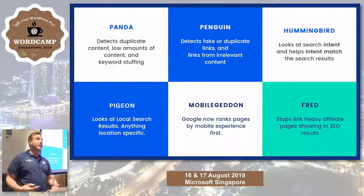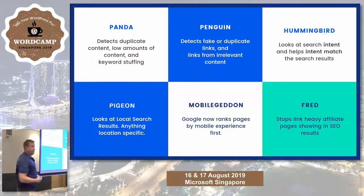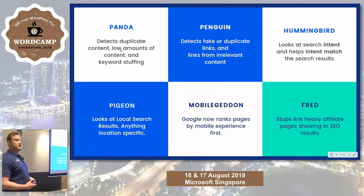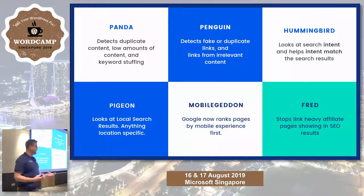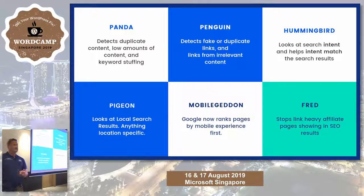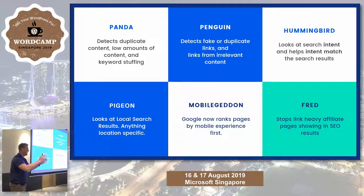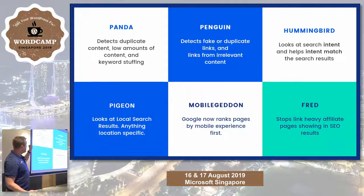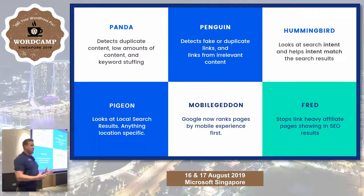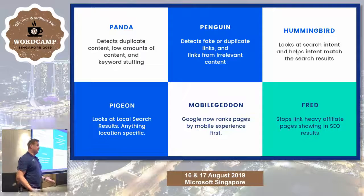Since PageRank, they've come up with all sorts of other algorithms. Panda detected duplicate content — a lot of WordPress users got hit because of duplicate category and tag pages. Anyone with tag-happy customers putting five variations of the same tag just created five pages of duplicate content. Penguin detected fake or irrelevant links — there's no point linking from a plumber's website to a butcher's. It doesn't make sense and it doesn't count.